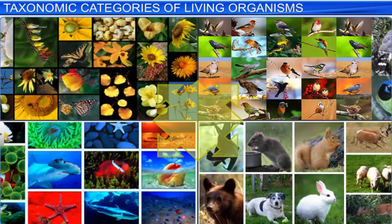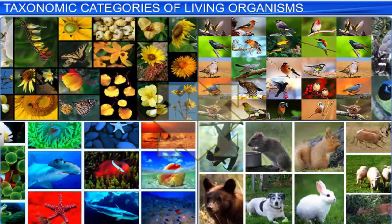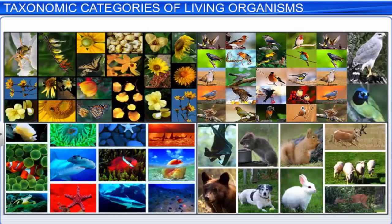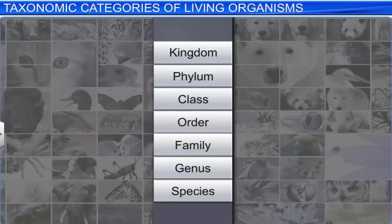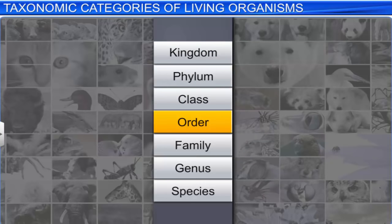Since a category is a part of the taxonomic arrangement, it is known as a taxonomic category, and all categories together constitute the taxonomic hierarchy. Organisms are classified using common categories such as kingdom, phylum or division, class, order, family, genus, and species. These taxonomic categories are also known as broad categories.